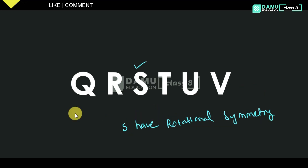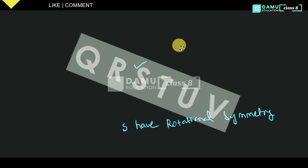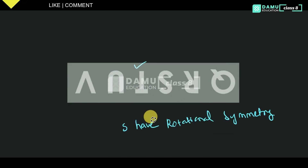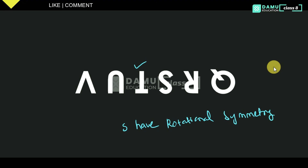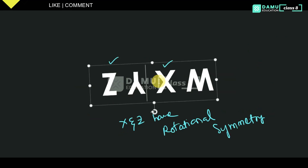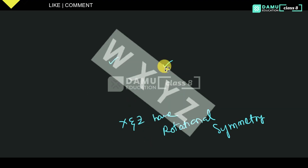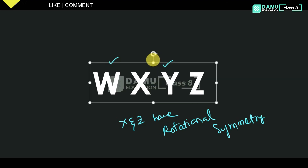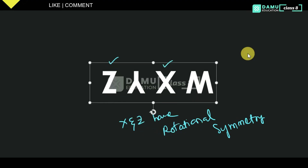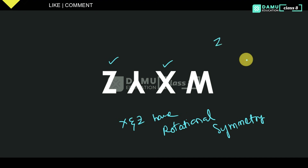For Q, R, S, T, U, V — rotate it like this. Only S — you can see yes, up and down S has point symmetry. Then for W, X, Y, Z — it needs to rotate like this. Z and X have point symmetry.